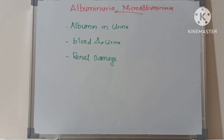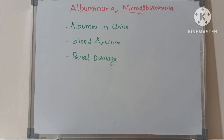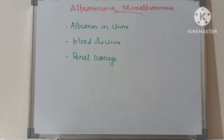Today we will discuss albuminuria and microalbuminuria. Albuminuria is the excretion of albumin in urine. Normally, a healthy kidney doesn't allow albumin to pass from blood to urine, so albuminuria is an indication of renal damage.